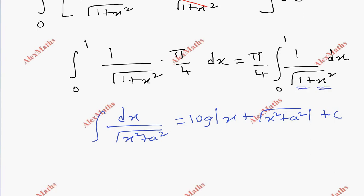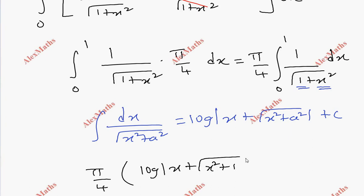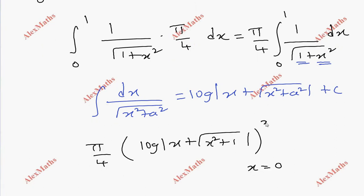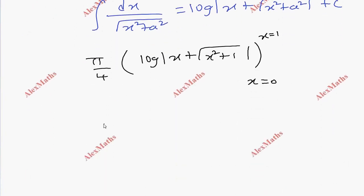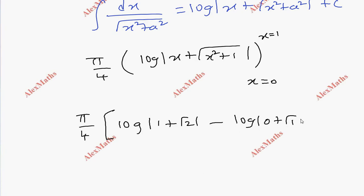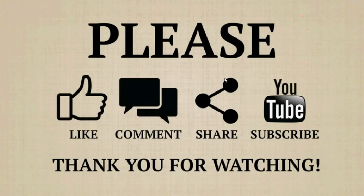Here a squared is 1. Applying the formula: pi by 4 times log mod x plus root of x squared plus 1 mod, and we substitute the limit of x from 0 to 1. Substituting x equals 1: log of mod 1 plus root 2. For the lower limit x equals 0, we get log 1 which is 0. So the final answer is pi by 4 times log of 1 plus root 2.